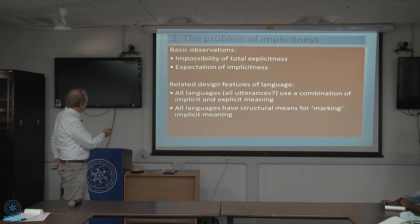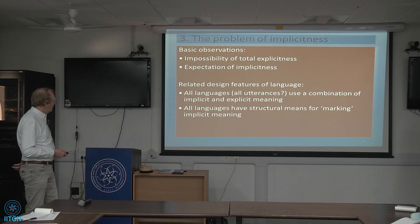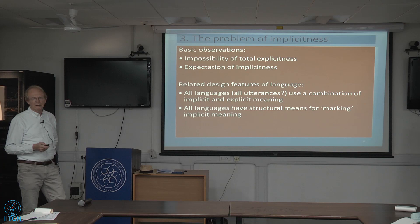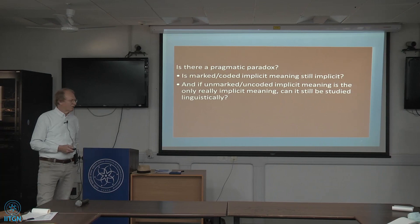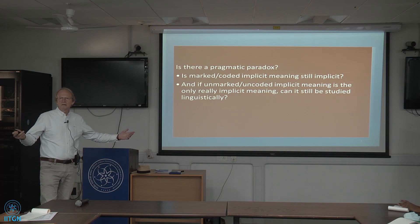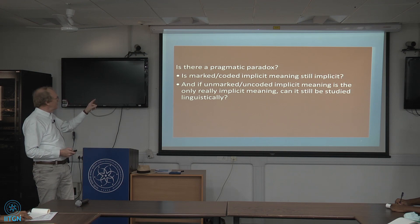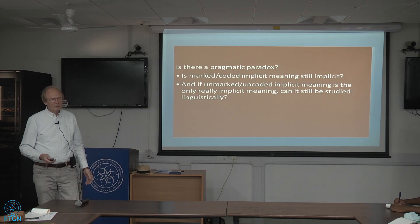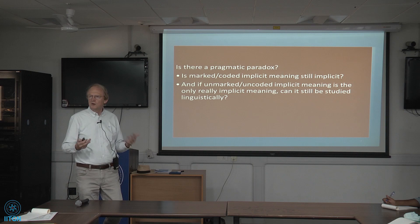All languages, and probably all utterances, use a combination of implicit and explicit meaning, and all languages have structural means for marking implicit meaning. This raises a pragmatic paradox: is marked or coded implicit meaning still implicit? Probably not fully. And if unmarked, uncoded implicit meaning is the only true implicit meaning, can it be studied linguistically? If it is totally fully implicit, you cannot study it linguistically — you need linguistic traces.